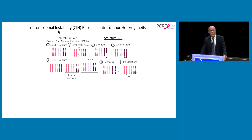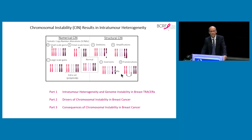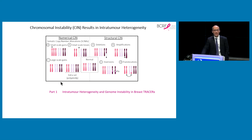Chromosomal instability can be thought of in two ways: numerical chromosomal instability, relating to alterations in chromosome number — gains or losses of whole chromosomes or whole genome doubling — and structural chromosomal instability, which refers to deletions, amplifications, inversions, and translocations. In part one of the talk, I'll cover intratumor heterogeneity and genome instability in Breast TRACERx, then underlying drivers of chromosomal instability prevalent in breast cancer, and finally the consequences of chromosomal instability in breast cancer evolution.